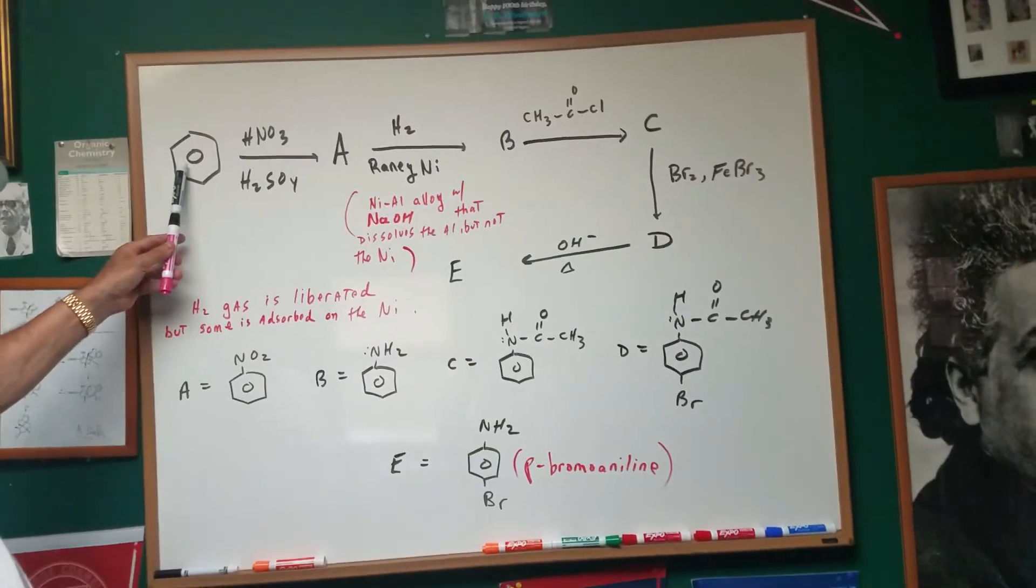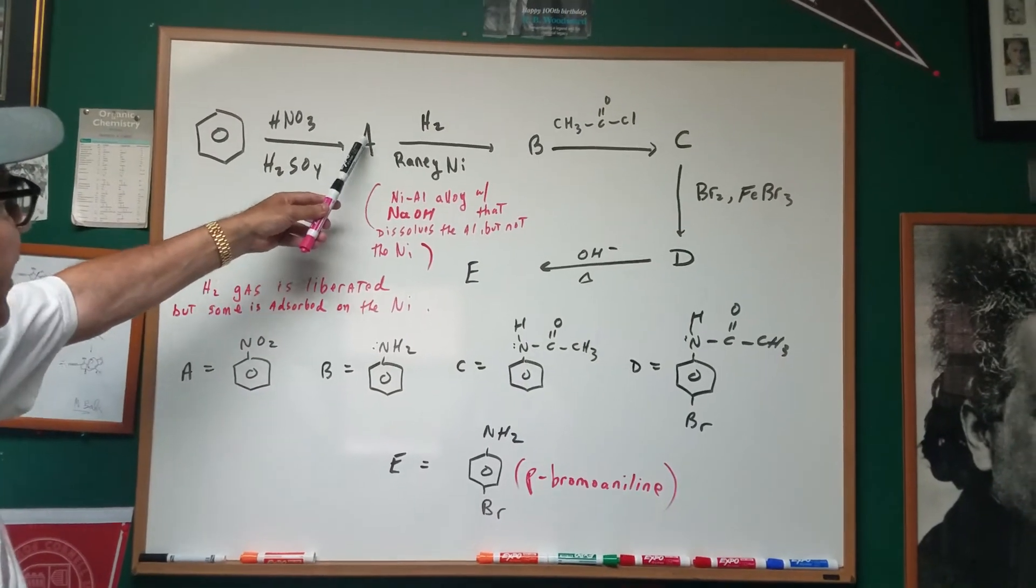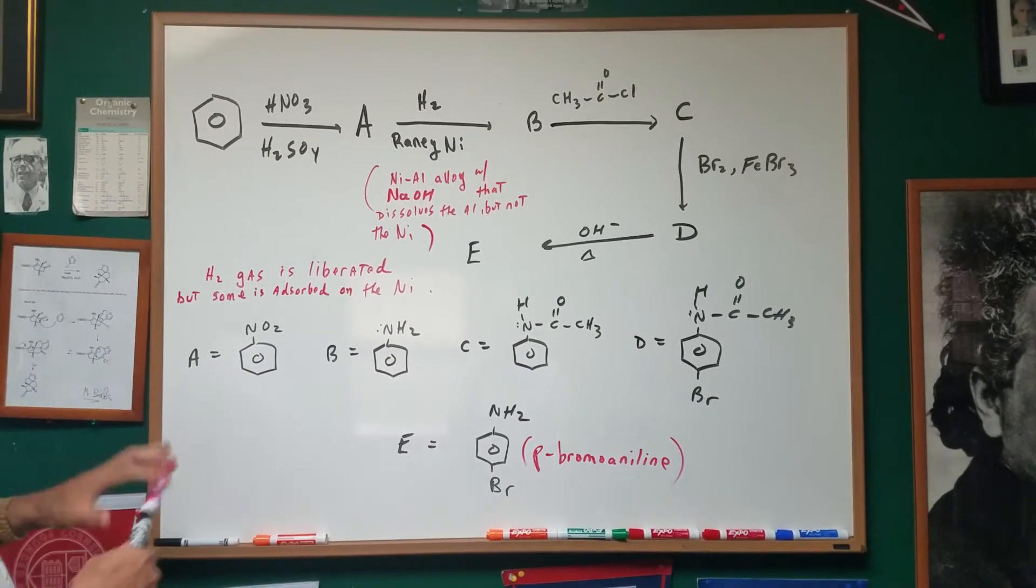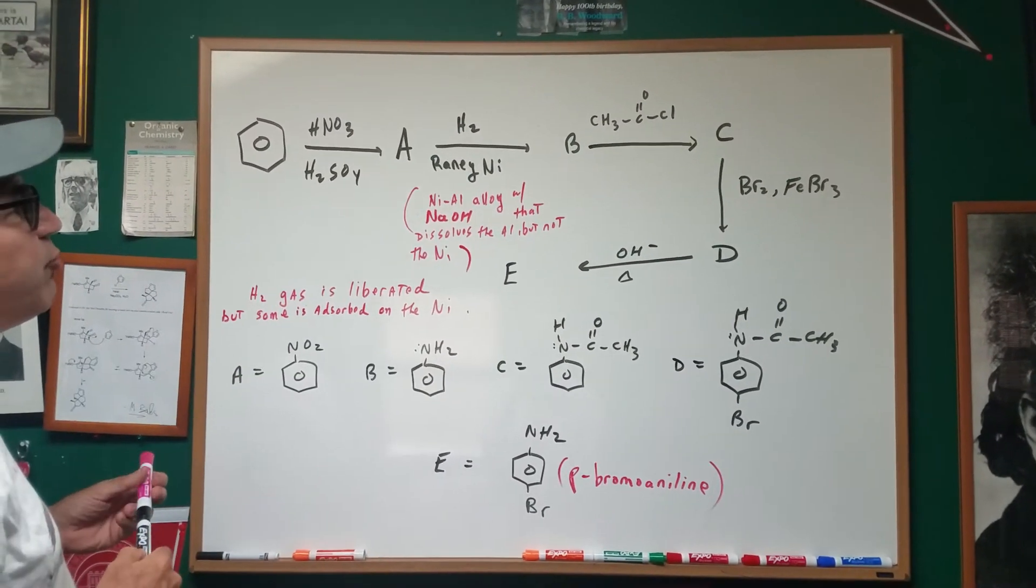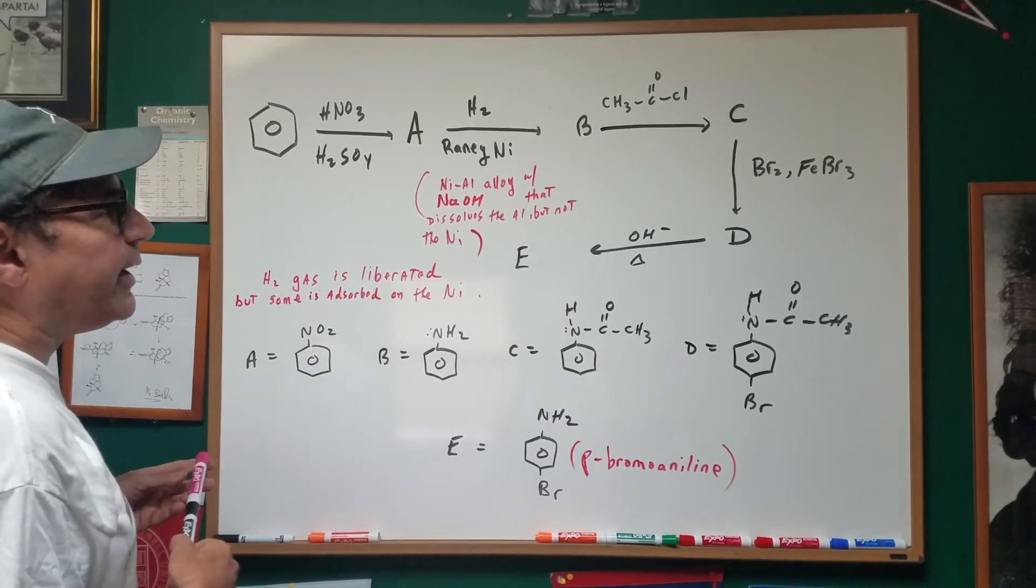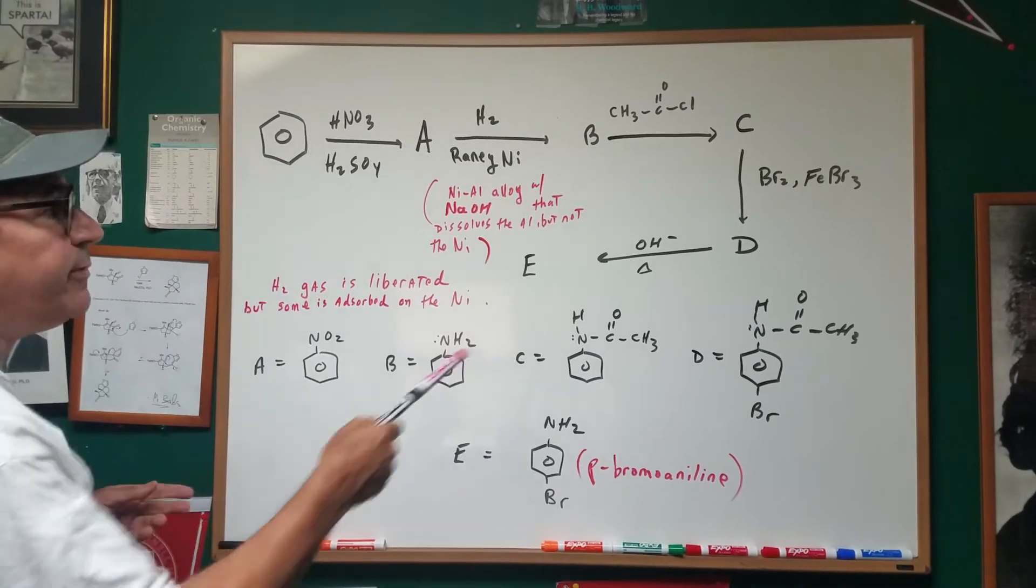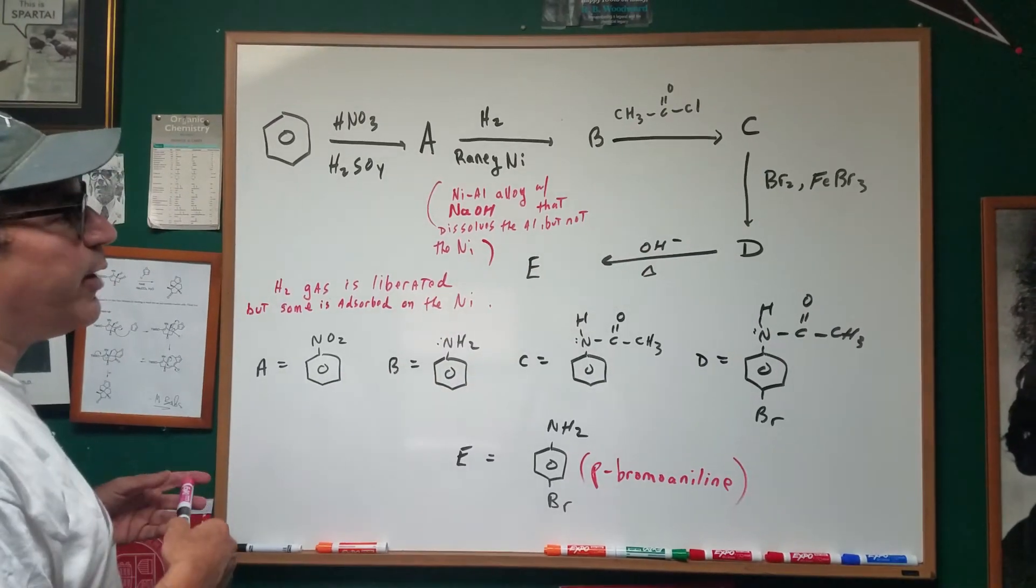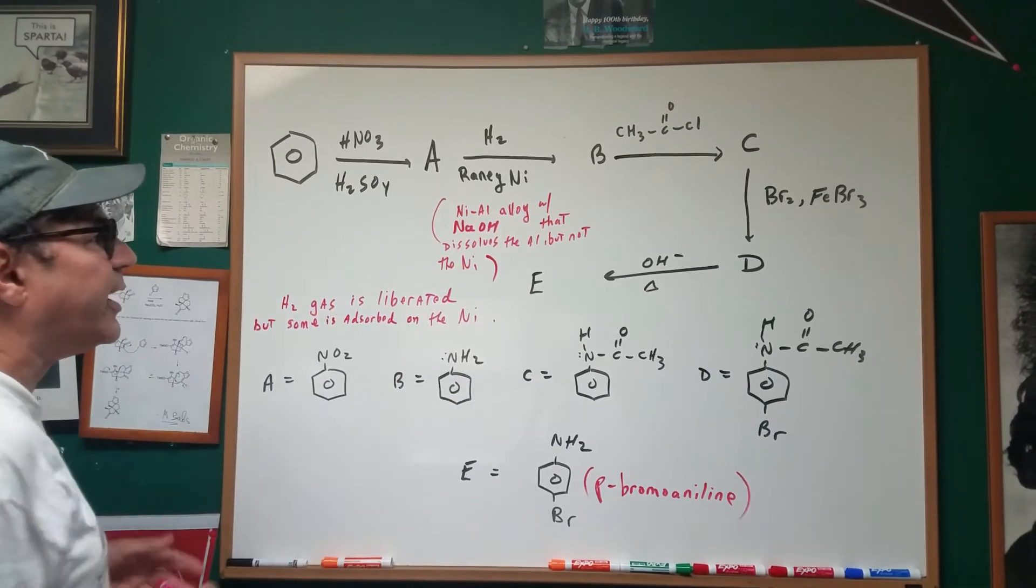What I'm going to do is I'm going to take benzene, and I'm going to nitrate it to get compound A. And then I'm going to treat it with hydrogen and rainy nickel. And then I'm going to acetylate it, then I'm going to brominate it, and then I'm going to add base to it and hydrolyze the molecule to get the final product.